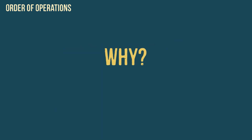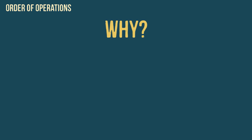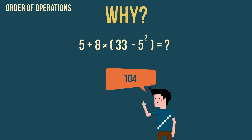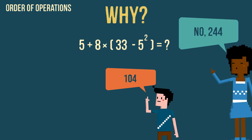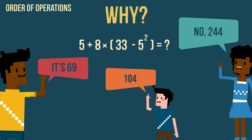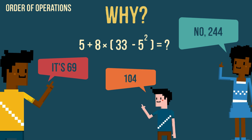So, why do we need an agreed order of operations? Take this question for example — without agreeing what order to calculate it in, people could get different answers. That is why we have an agreed rule to follow when working out questions like this.